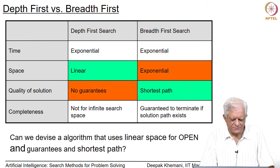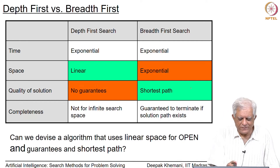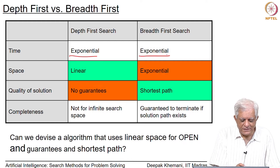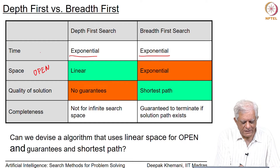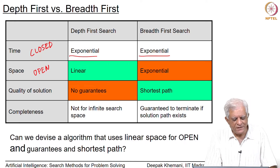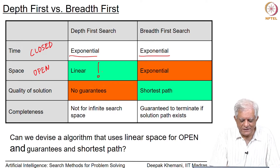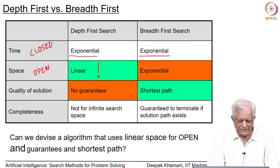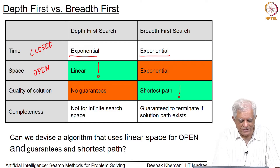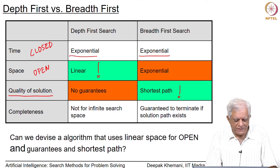If you look at these two properties of the two algorithms, you can see that for both of them time complexity is exponential in nature. If you look at space complexity, which is the size of open, time complexity can be thought of as the size of closed, because those are the nodes that you have seen. Space complexity is the set of candidates that you are keeping, which is the size of open. You can see that depth first search wins on space complexity, but breadth first search wins on the quality of the solution, because it will give you the shortest path.